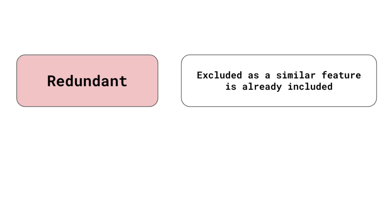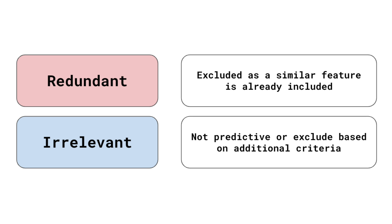We say the remaining income features are redundant. We want to exclude redundant features from our shortlist, even if they are predictive. We also want to remove any features that are not predictive or should not be considered for some other reason, such as if it is illegal to use the feature.